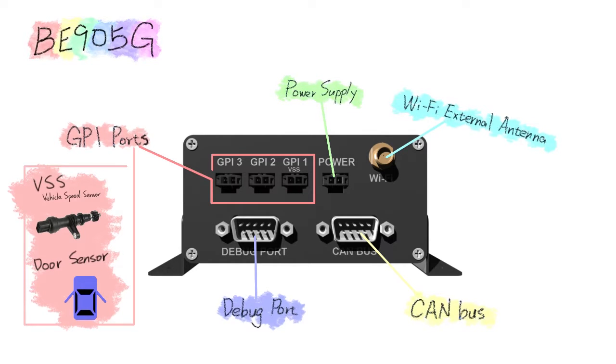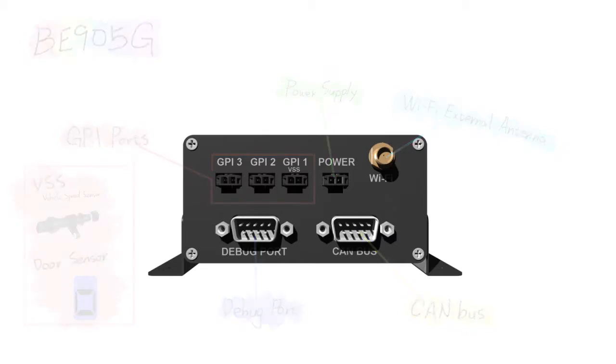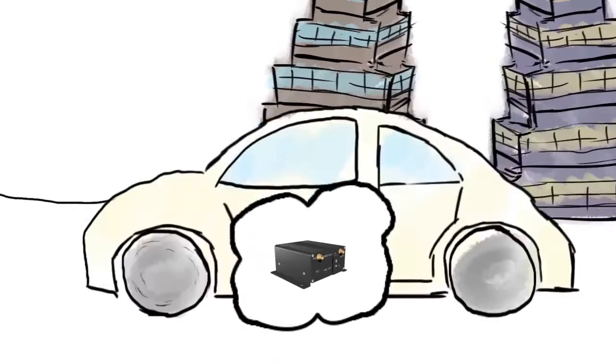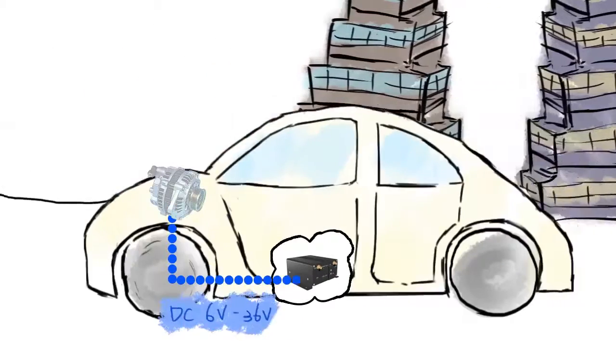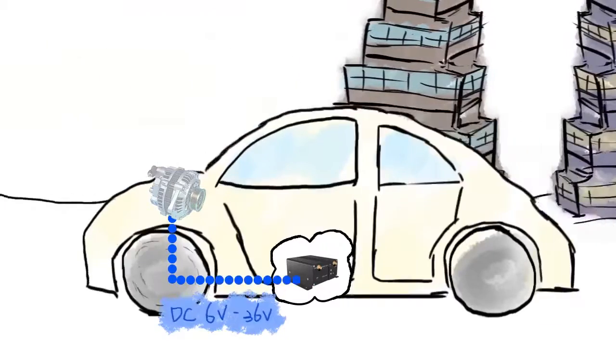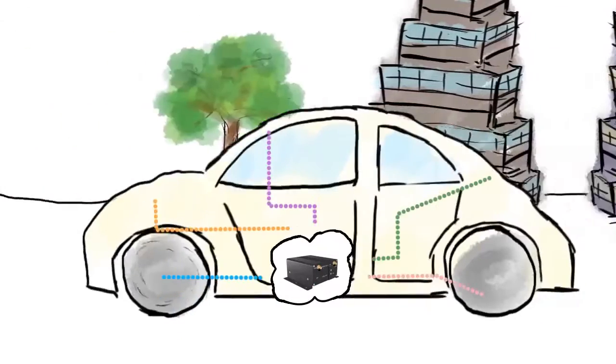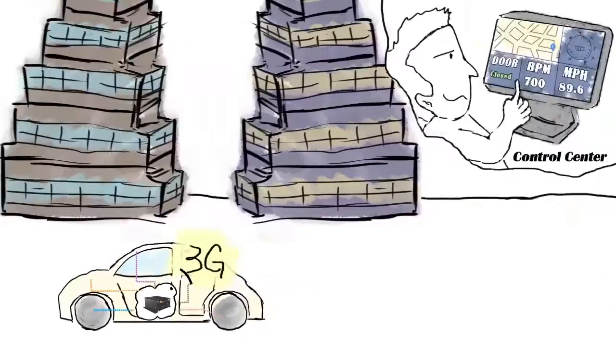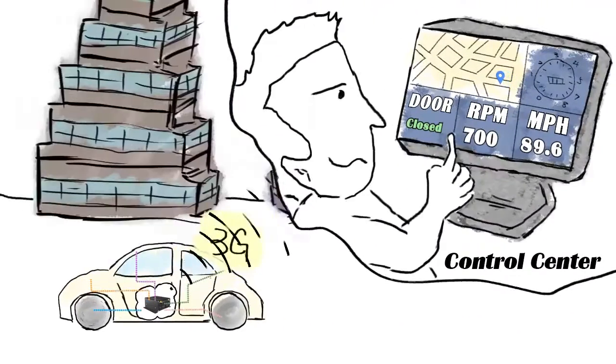You can watch information from BE905G by using a smart device with Wi-Fi, so the driver and passengers can check their driving problems and safety.